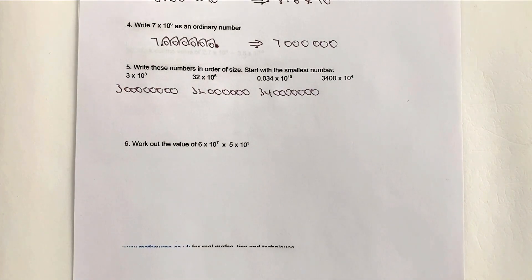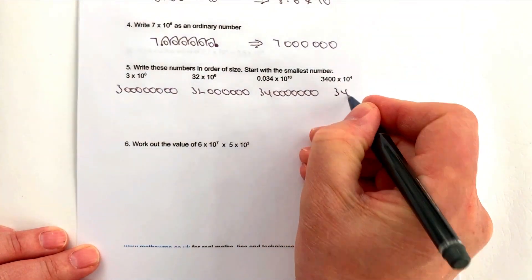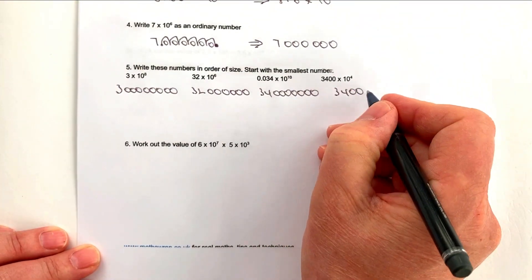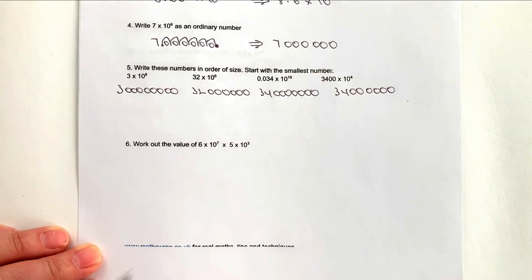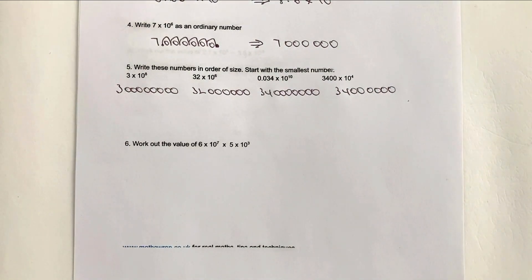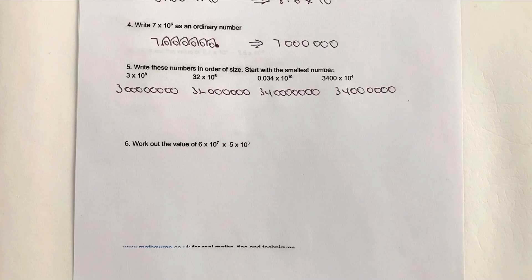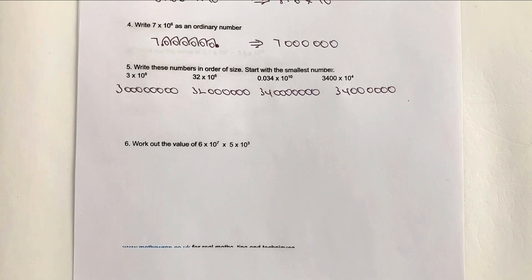And lastly, 3,400 times 10 to the power of 4 is going to be 3,400 with another 4 zeros. It's going to be quite tricky to put those in order, and really that's the whole idea of standard form — it makes things easier without having to write lots of zeros. But we need to compare the numbers and figure out a way of doing that.